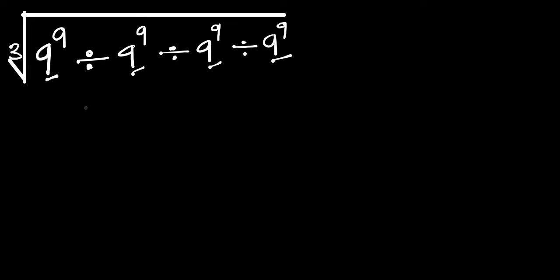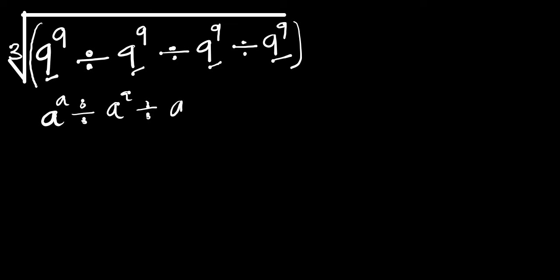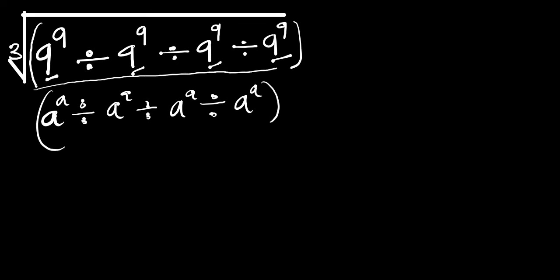What we are going to do is concentrate on what we have inside this cube root first. Now let's consider this analogy: if you have a to the power of a, divided by a to the power of a, divided by a to the power of a, and divided by a to the power of a — this is in the form of what we have inside this cube root.